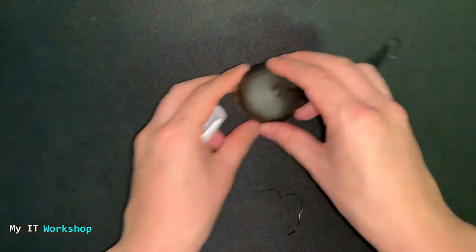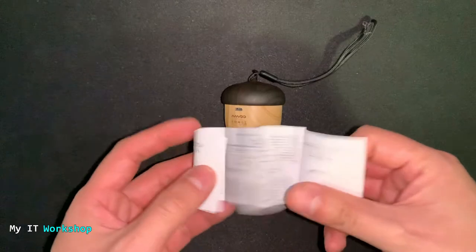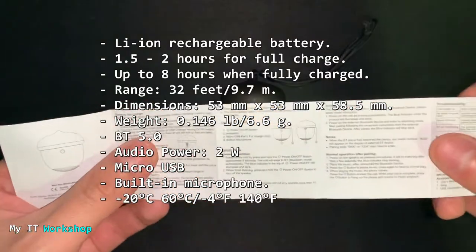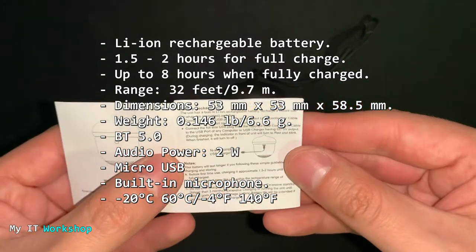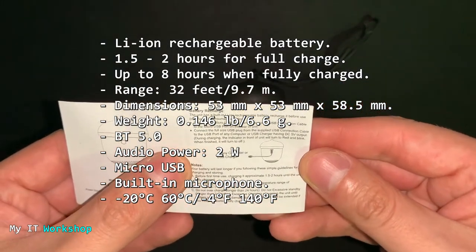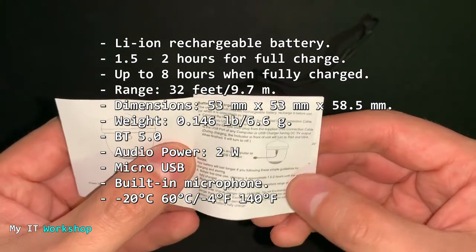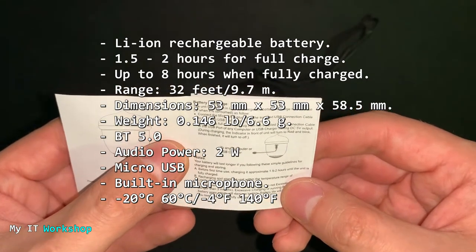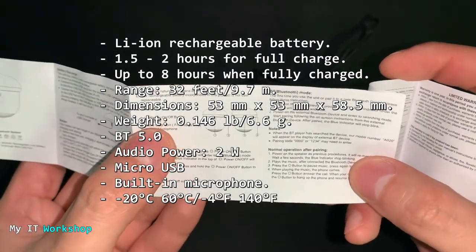Now we have also the manual. The characteristics are: this device uses a lithium rechargeable battery. It needs between 1.5 to 2 hours for a full charge. After that it can last up to 8 hours. The range in an open area and an open room is 32 feet or almost 10 meters. The dimensions you can see them there.